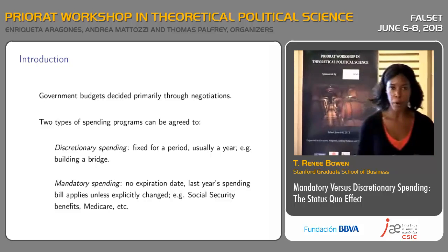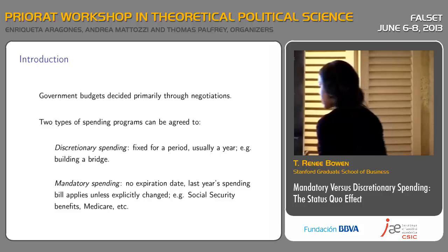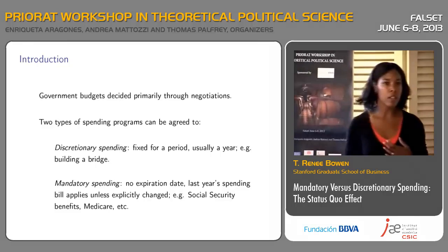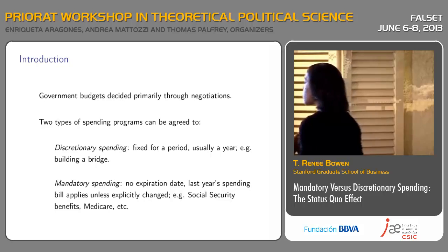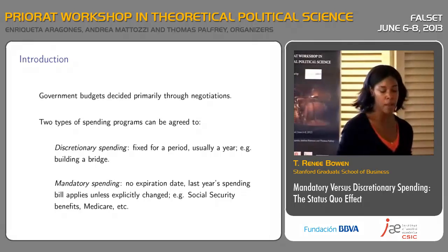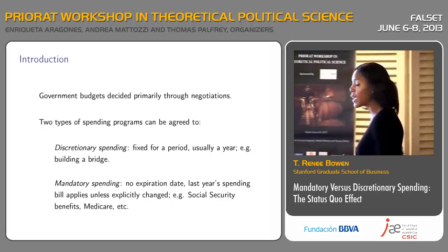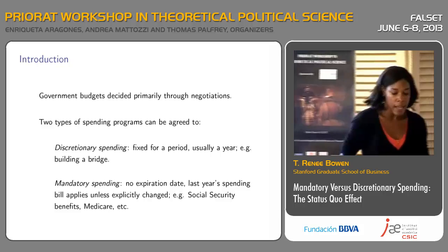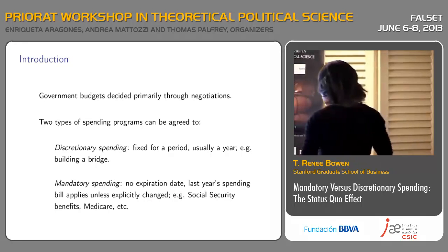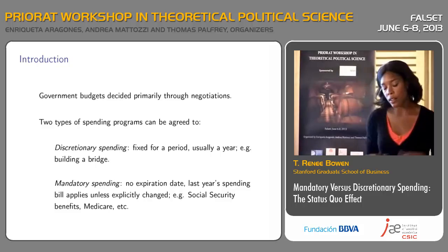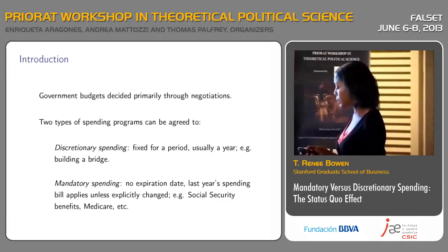What we call discretionary spending programs: once you have decided on the allocation for the current period, in the next period, if you don't decide on a new allocation, essentially nothing gets spent. Versus mandatory spending programs, where these programs are written into law. Some good examples are Social Security and Medicare. Once you've written these programs into law, in the next period, if you want to change these programs, you need agreement of the legislature or the government.